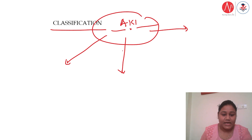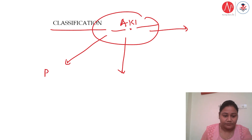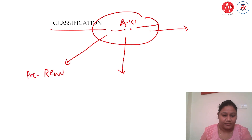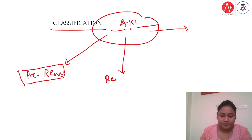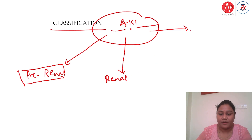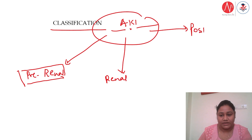The first classification is pre-renal. The second is renal, also called intra-renal. And the third classification is post-renal. So these are the three classifications of acute kidney injury.